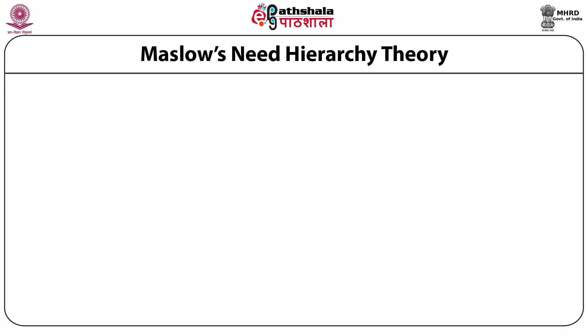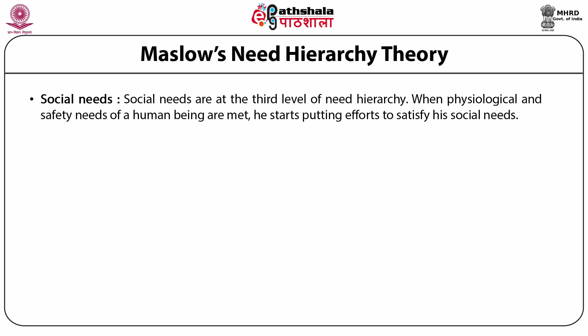The third category of needs given by Maslow's hierarchy theory is social needs. Social needs are at the third level of need hierarchy. When physiological and safety needs of a human being are met, he starts putting efforts to satisfy his social needs. These needs represent the need for love, affection, friendship, membership in groups, social acceptance, etc.